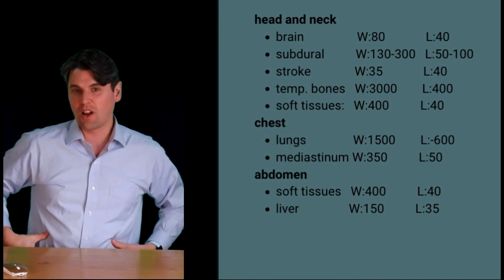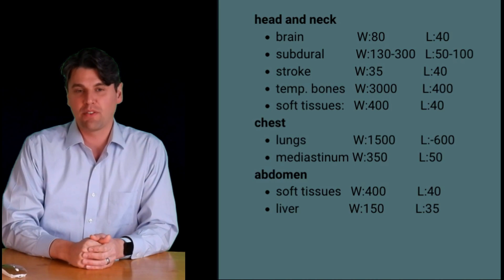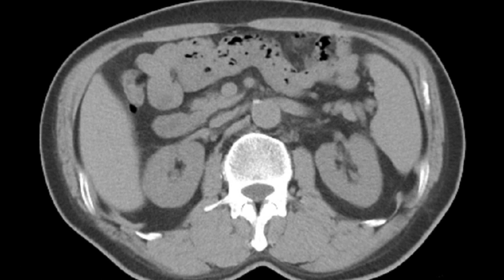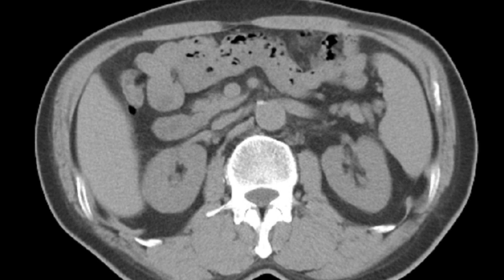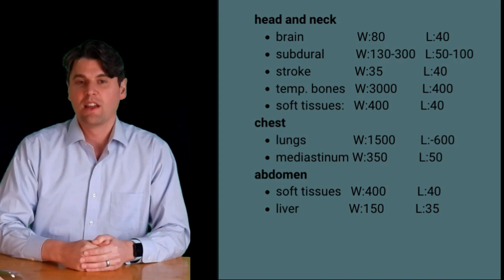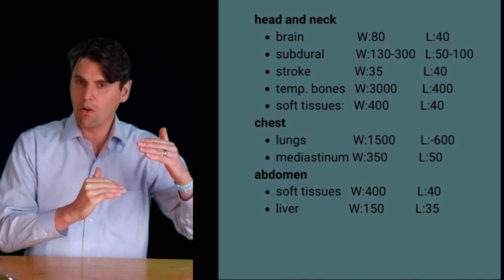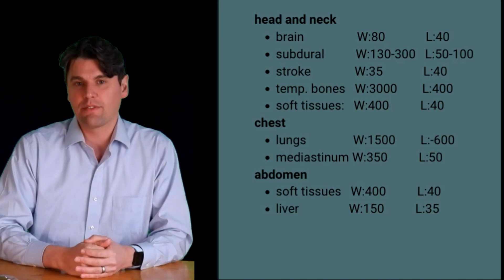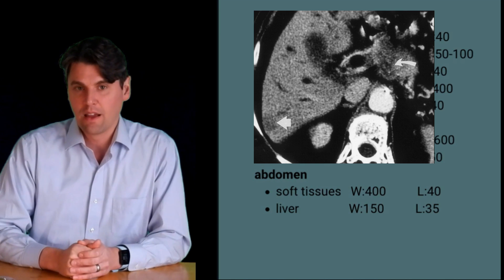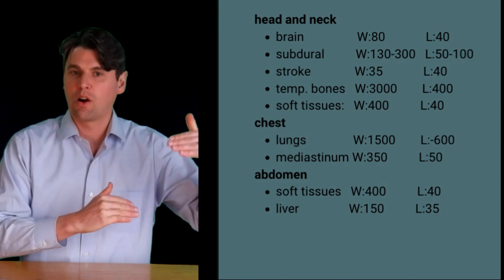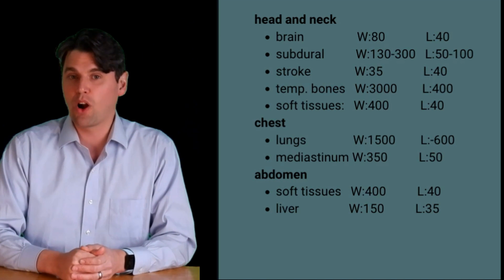The abdomen is the second most prevalent type of exam on CT scanners, and you'll frequently want a standard soft tissue window — a window level of around 40 and a window width of around 400, which is generally good for looking at abdominal soft tissues. Similar to the brain, you can also narrow the width to focus on specific structures; for liver-specific imaging you may want a window width of around 150 compared with the standard 400 for general abdomen imaging.